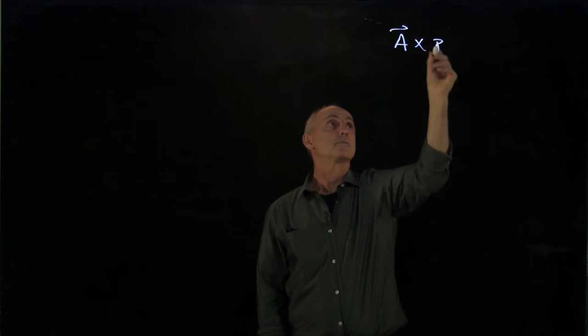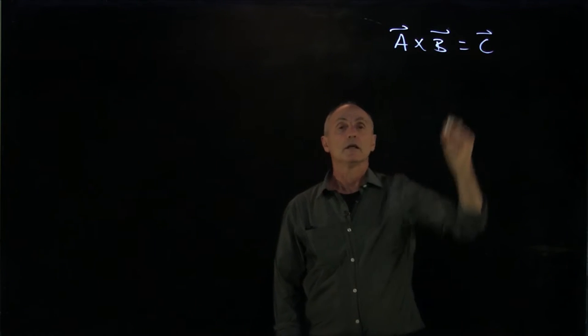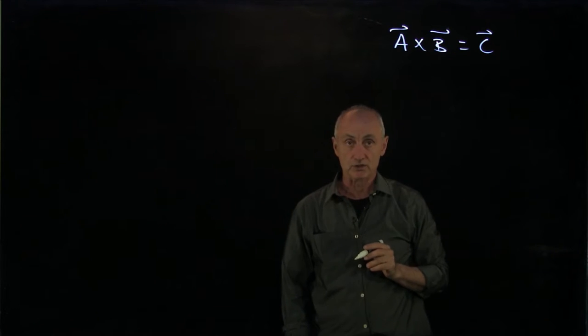So when we have a vector product of two vectors, a cross b equals c, let's compute that vector product in different coordinate systems.